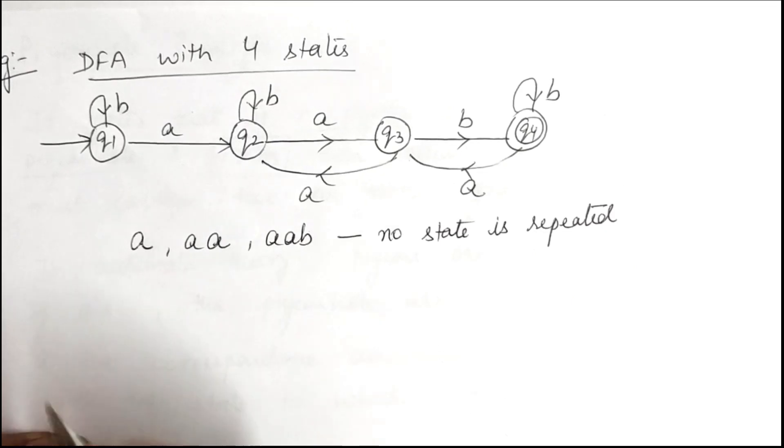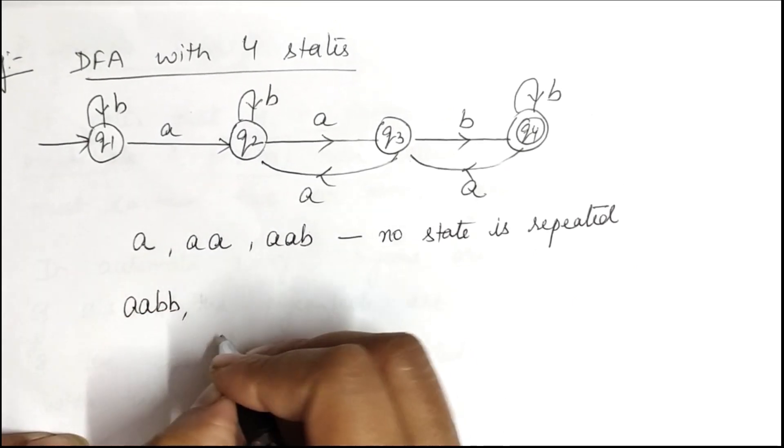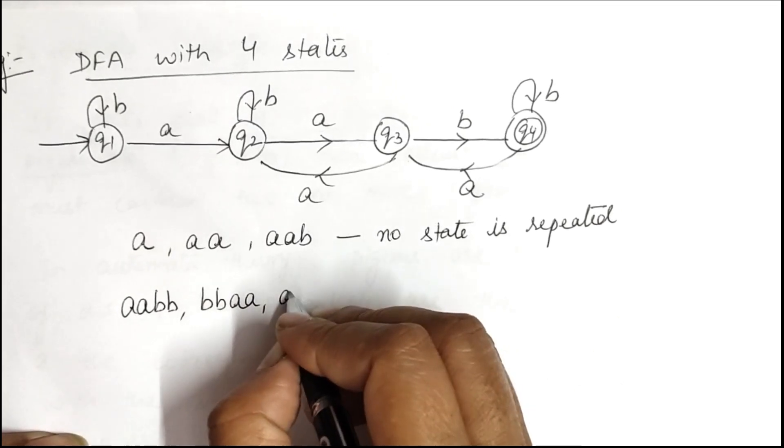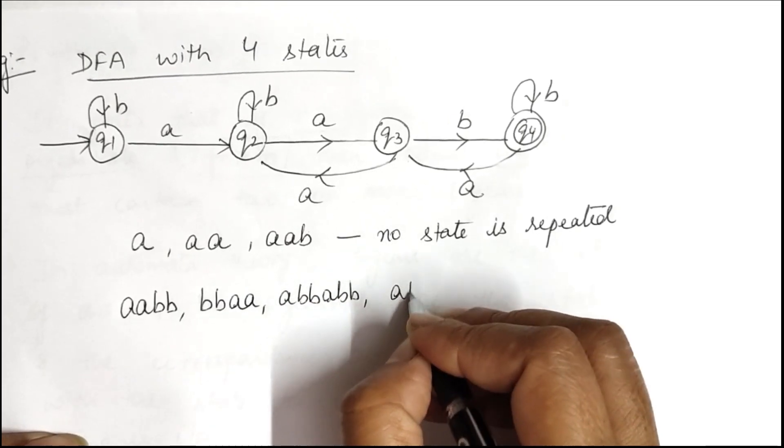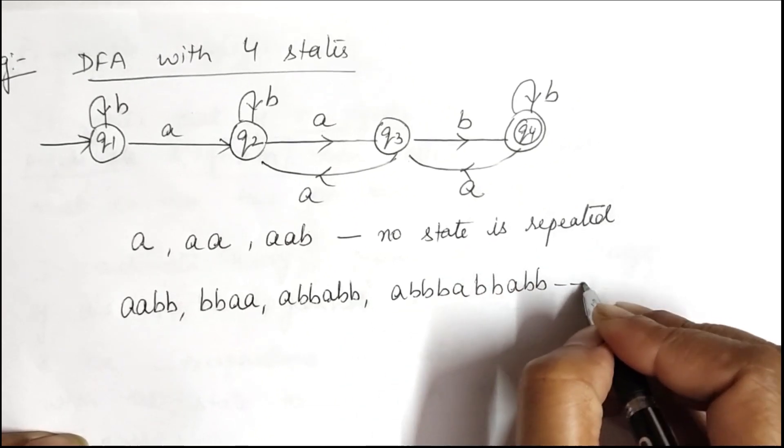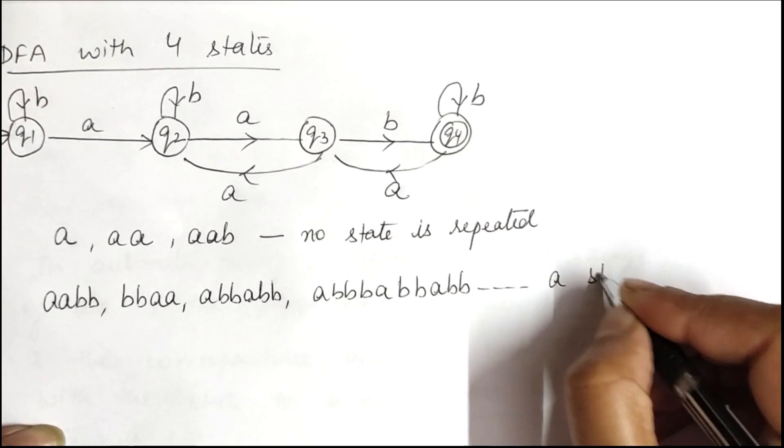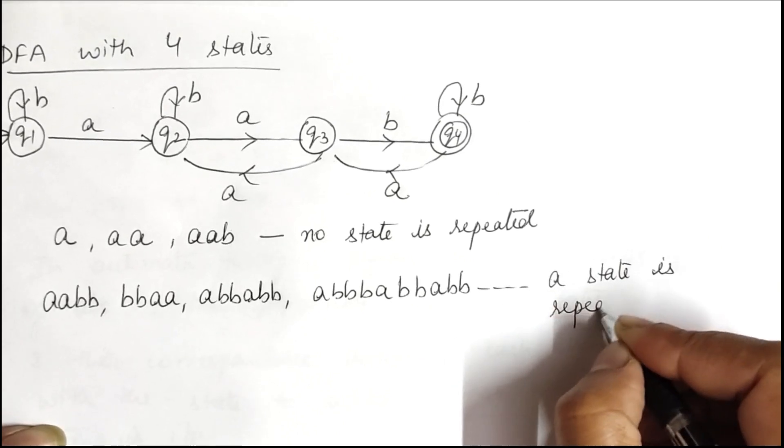But if we take the string as aabb, bbaa, abbabb, or abbaabbabb, in all these cases a state has to be repeated. A state is repeated.